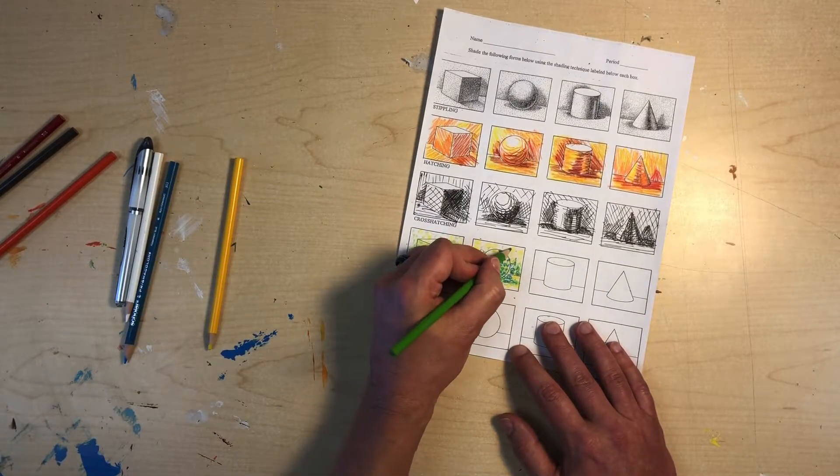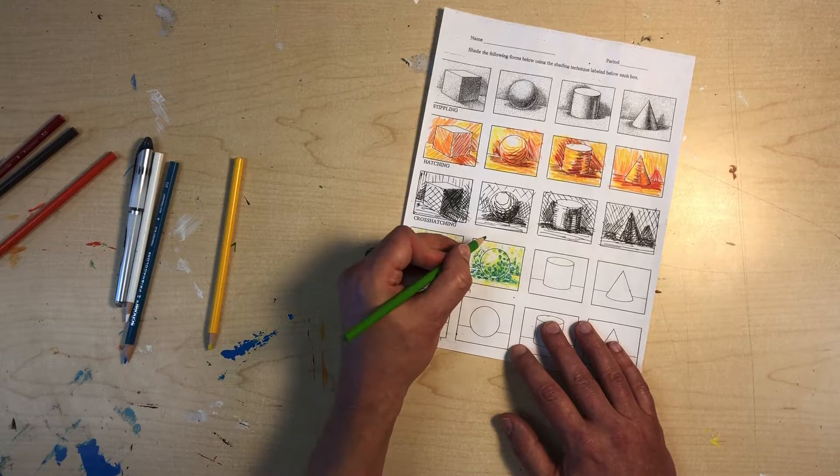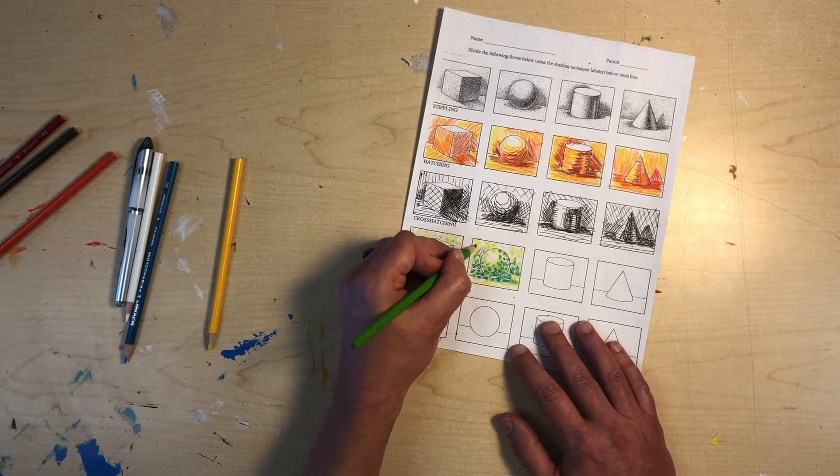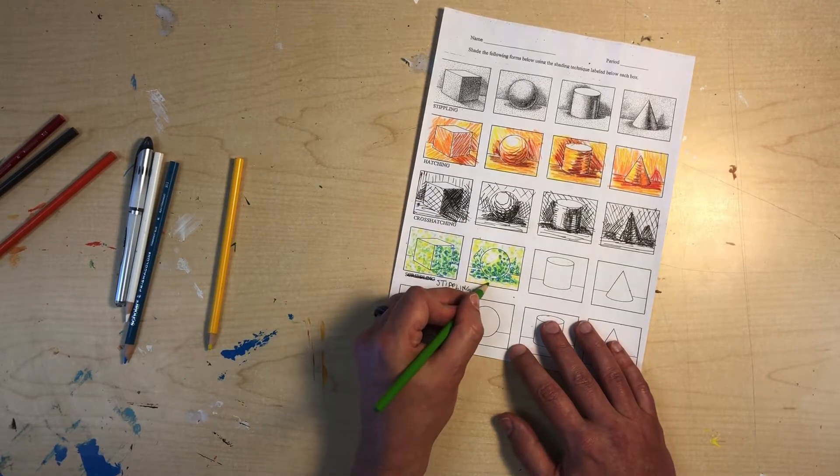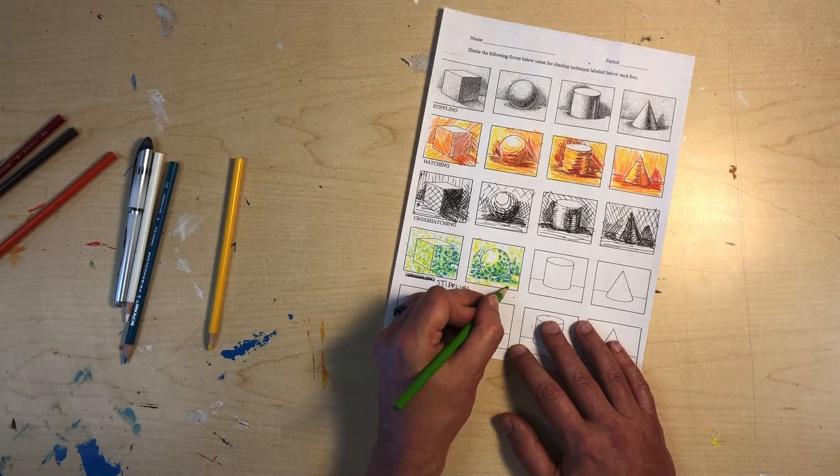I can go back in and just add a few green dots here and there. It's just going to be smaller. And not as close together.